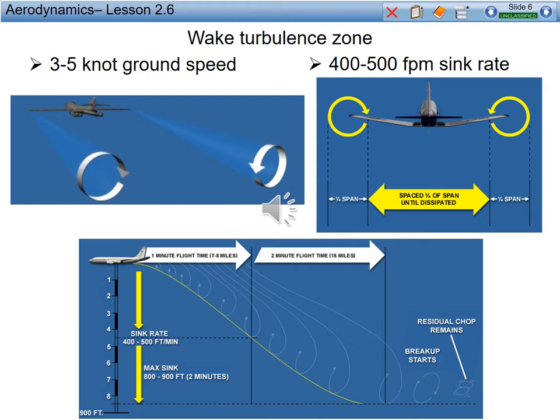The wake turbulence zone — the wingtip vortices coming off your aircraft are going to have a 3 to 5 knot ground speed, which is also correlated with a 400 to 500 foot per minute sink rate. The span between the two wingtip vortices is approximately the distance between the wings themselves. Here's a depiction of what they actually look like as they depart off the aircraft, showing the ground speed as well as the sink rate associated with them.